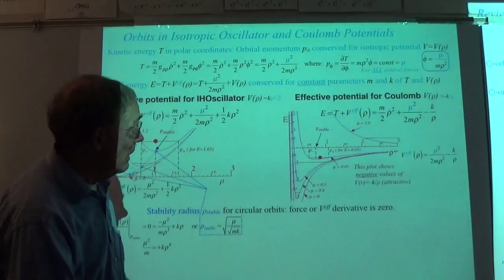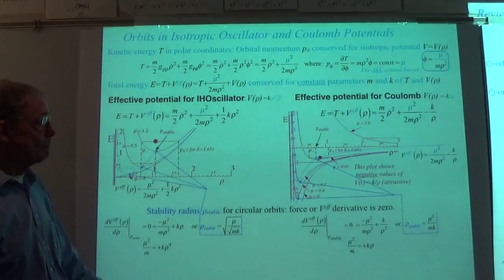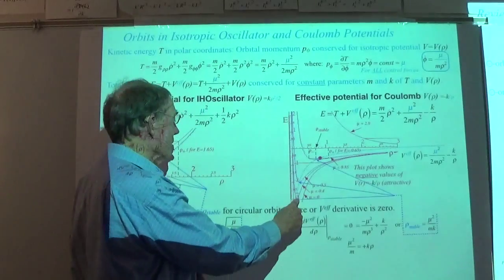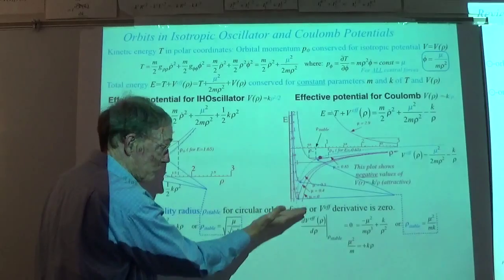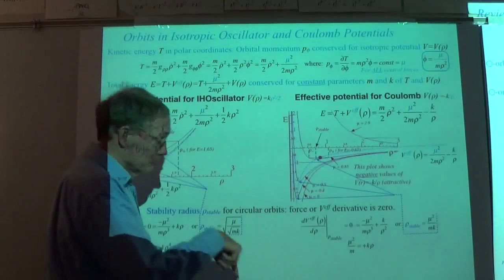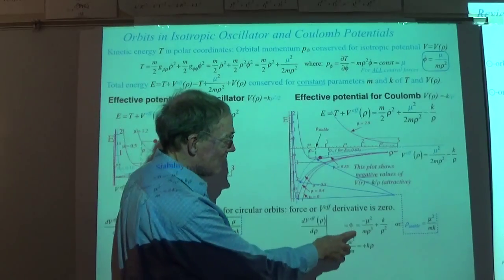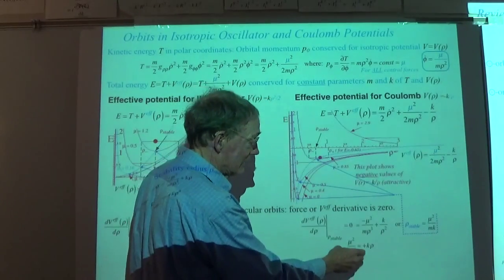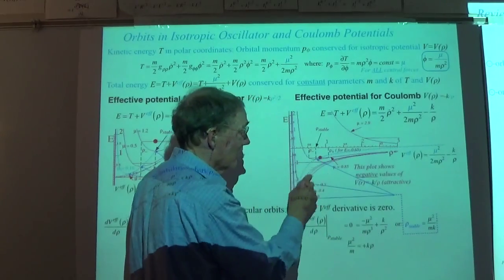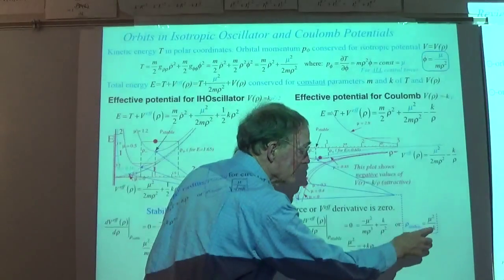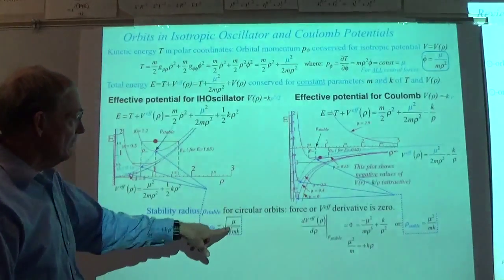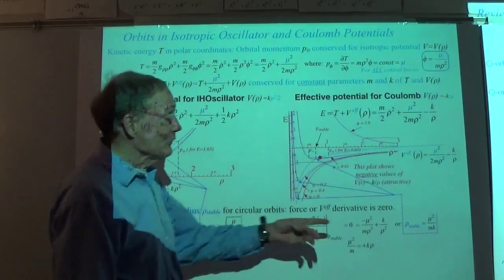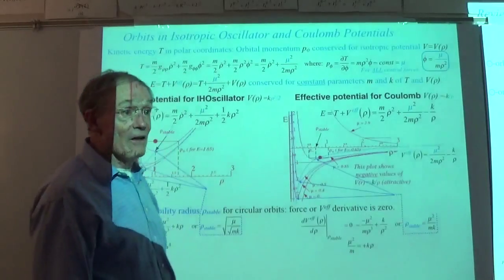In the Coulomb case, the effective potential drops to negative infinity as ρ → 0. I would solve the derivative of this equal to zero to find the stable radius, which depends on the angular momentum and inversely on mk. The comparison is between this — a square root of μ over a square root of mk — and the Coulomb case which is μ² over mk by itself. So that's the beginning of the comparison of the algebra for these two potentials.